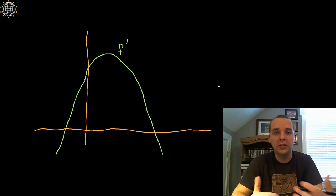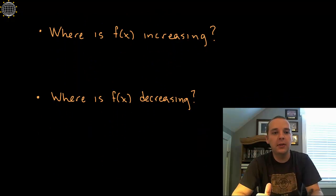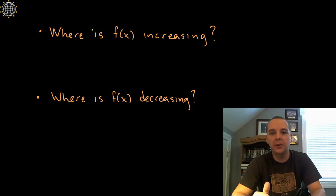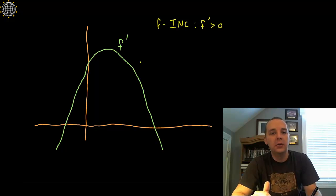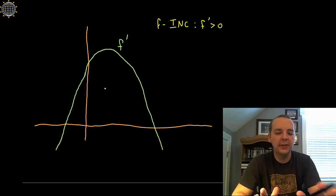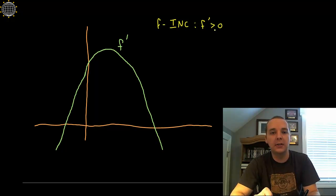Let's take a look at some typical questions that are asked given the graph of the derivative. First up: where is the original function increasing and decreasing? Very common, very typical question. Let's remind ourselves — what does it mean for a function to be increasing? F is increasing if its derivative is positive. So we're going to look at this graph and resist the temptation to look at where this graph is increasing. I want to know where f, the original function, is increasing — and that's where the derivative function is positive, meaning its y-values are positive.